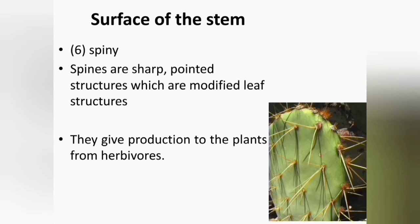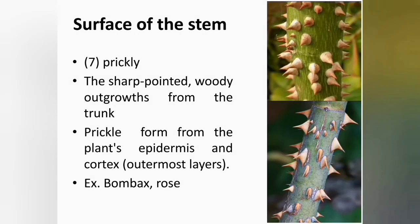Spines are short, pointed structures, or modified leaf structures on the stem surface. They give protection to the plants from herbivores. For example, in Opuntia, minute leaves of the axillary bud develop into spines. Prickles are short, pointed woody outgrowths from the trunk, formed from the plant epidermis and cortex. For example, Bombax, Rose.